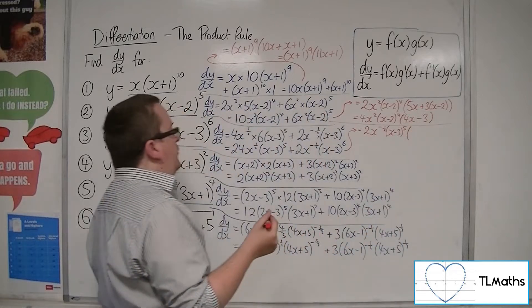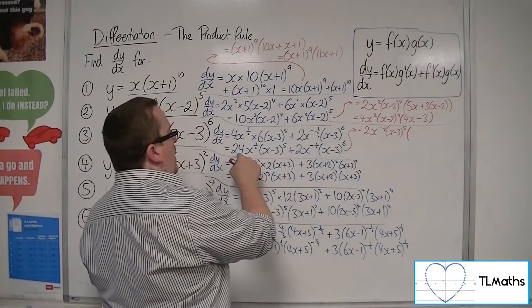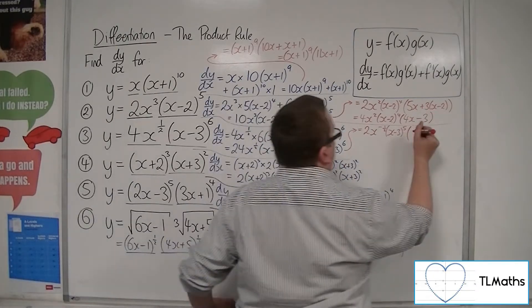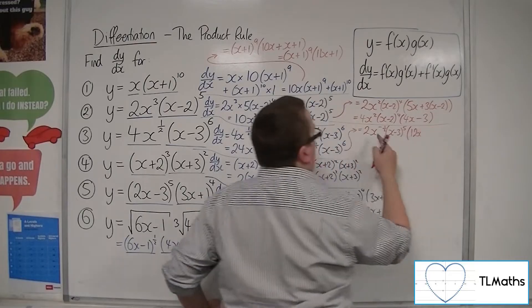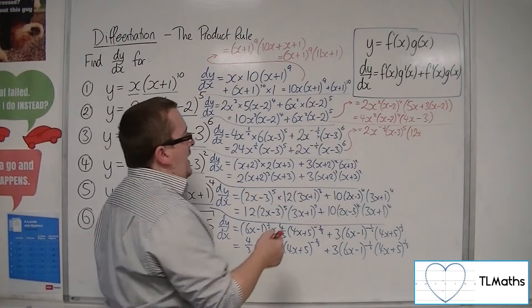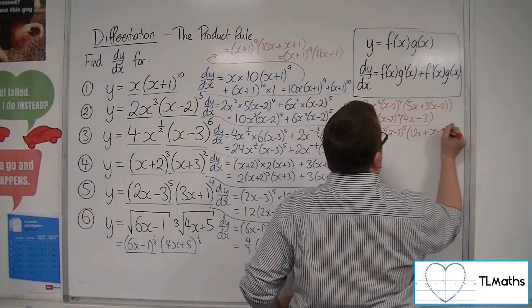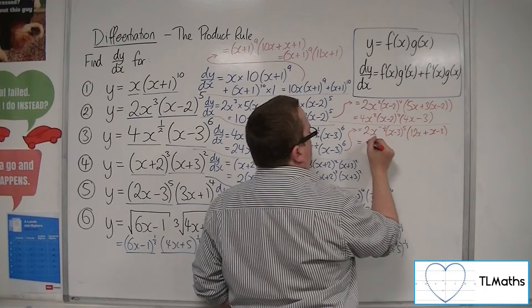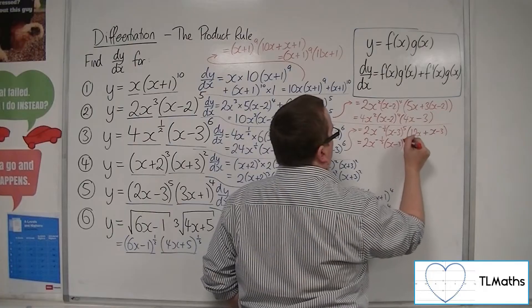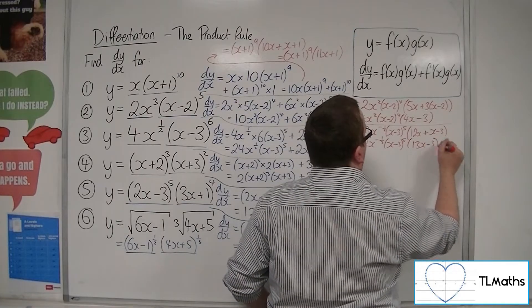Now, what that leaves me with is a 12x there, because x^(-1/2) times x will make the x^(1/2). And over here, I've got that bit sorted. I've just got an (x-3) lingering there, so (x-3). So that's 2x^(-1/2)(x-3)^5, and that's 13x-3.